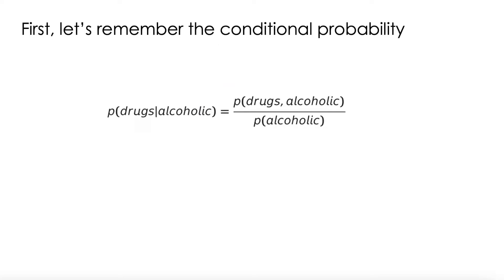We are going to remember the conditional probability, and I would prefer to start by an example. Let's say that if we want to calculate the probability of doing drugs given that we are alcoholic, this is the formula: it's the probability of doing drugs and being an alcoholic divided by the probability of being an alcoholic.